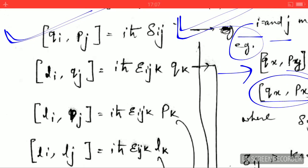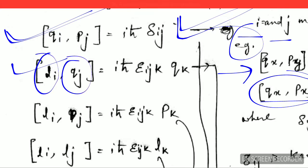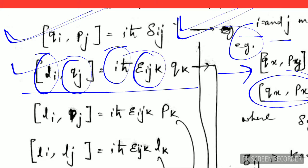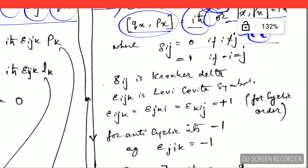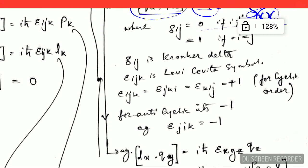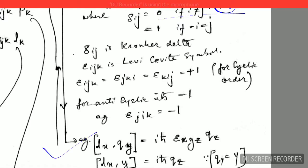Now let's see another very important commutation formula — the commutation relation between angular momentum and position: [L_i, q_j] = iℏ ε_ijk q_k. Here you are looking at two quantities: L (angular momentum) and q (position, which can be x, y, or z). Here ε_ijk is the Levi-Civita symbol.